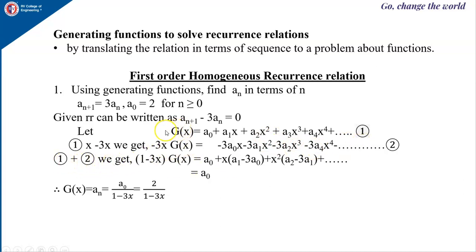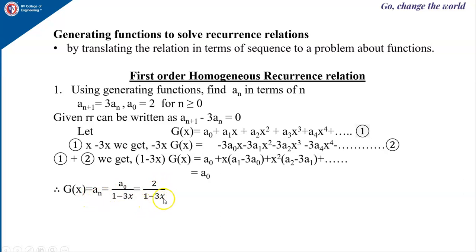Adding equations 1 and 2: (1−3x)·g(x) = a_0 + x·(a_1 − 3a_0) + x²·(a_2 − 3a_1) + ... Substituting n=0 into the recurrence gives a_1 − 3a_0 = 0, and n=1 gives a_2 − 3a_1 = 0, and so on. Therefore the right-hand side reduces to just a_0, so g(x) = a_0/(1−3x). Given a_0 = 2, we get g(x) = 2/(1−3x).